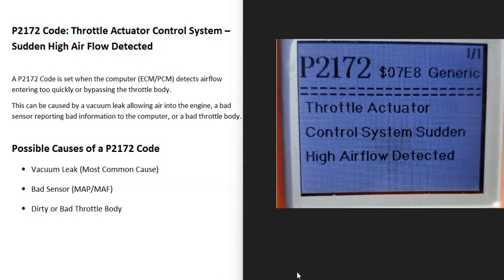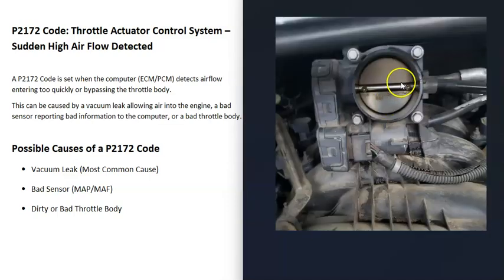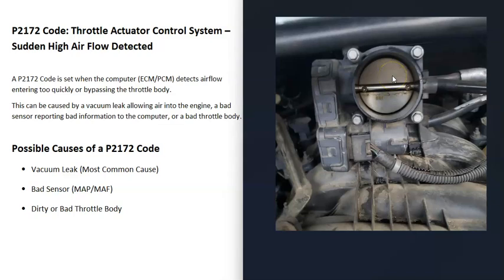There's a throttle body located on fuel injected engines, and basically all the air needs to be going through the throttle body. The computer can control how much air is going in by opening and shutting this throttle body plate. When you get a P2172 code, the computer is seeing that air is going around the throttle body rather than through it, or that too much air is going through it. Troubleshooting will be needed to determine why.